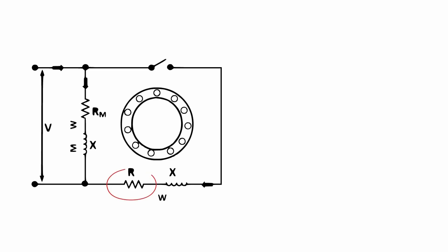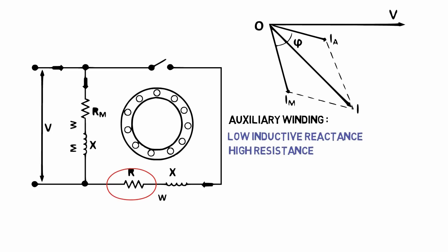A resistor is connected in series with auxiliary winding. The auxiliary winding has low inductive reactance and high resistance. So auxiliary winding current I am nearly in phase with line voltage.